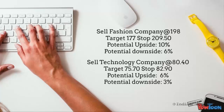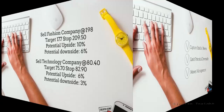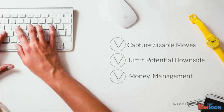Or sell a technology company around 80.4, target of 75, stop of 82.9 — a potential upside of 6% while a potential downside of only 3%. All these trades generated by using my trading strategies will enable you to capture a sizable move while limiting the potential downside to a much lower level.